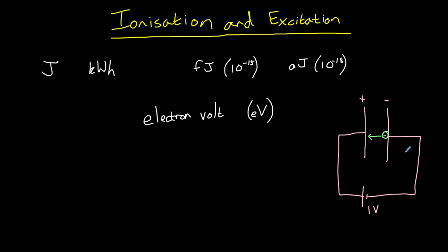This amount of work is the definition of the electron volt. We know that voltage is equal to work done per unit charge, so it follows that the work done on this charge is equal to the voltage multiplied by the charge. In this case the potential difference is one volt and the charge of an electron is 1.6 times 10 to the minus 19 coulombs.